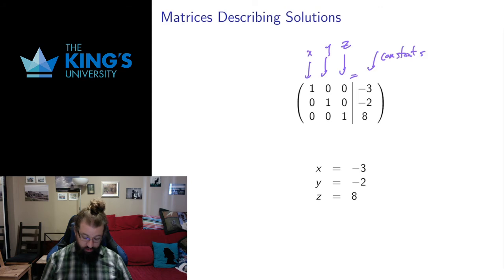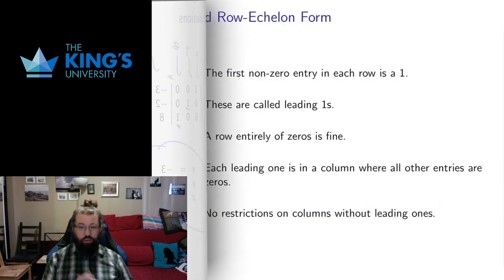If I translate this back, the first equation says 1 times x plus 0 times y plus 0 times z. Well, that's just x equals 3. The second equation, only the y shows up, says y equals negative 2. The third equation, only the z shows up, says z equals 8. That's a solution. That's no longer a system of equations. That tells us exactly what we want to know.